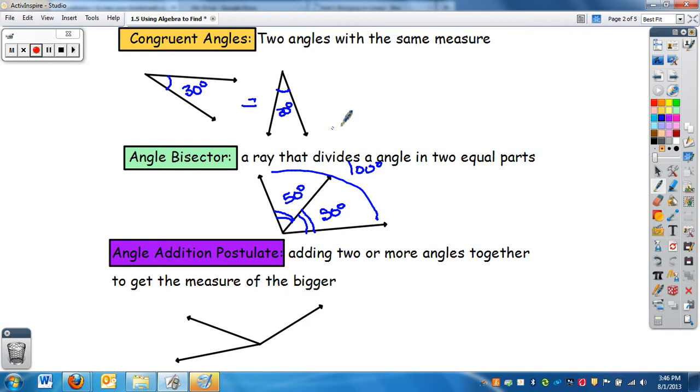And then you have the angle addition postulate, which is adding two or more angles together to get the measure of the bigger angle. So I have two small angles that make up one big angle. If this was 30 and this was 100 degrees, this entire angle would be 130 degrees. Two small angles make a bigger angle.